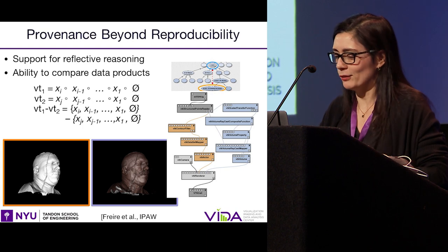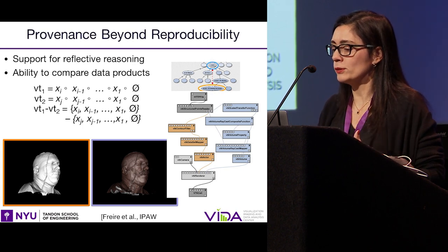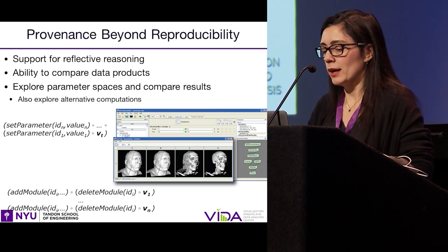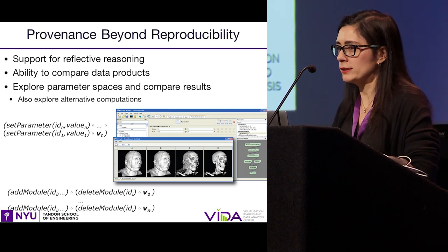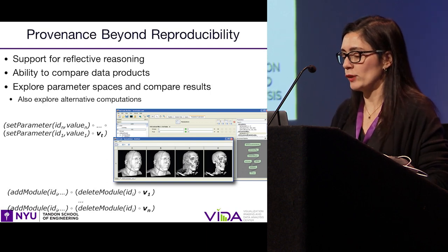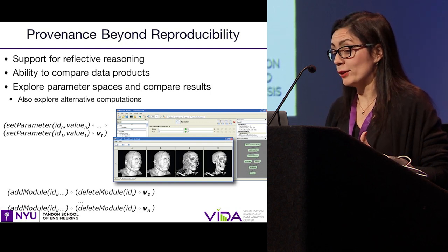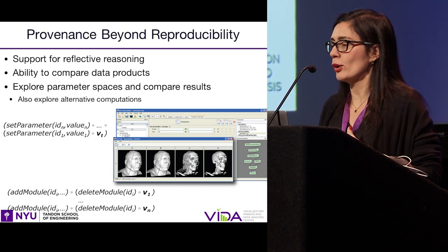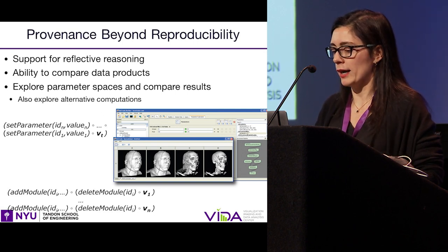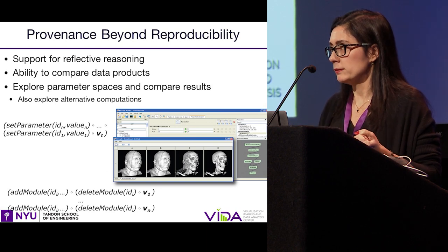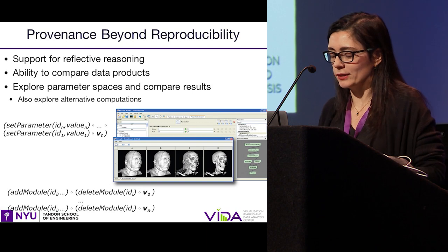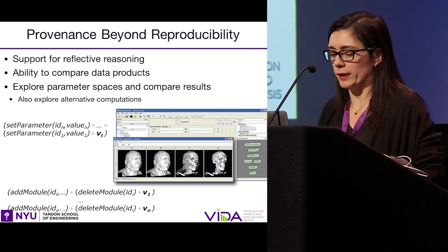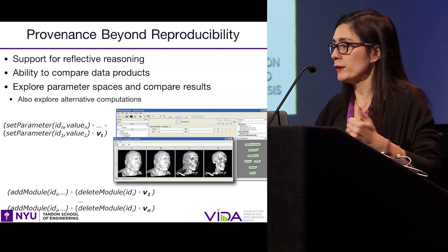Behind this, we actually have an algebra that also enables you to compute these differences in a very efficient way, even for very large workflows. This model also allows you to systematically explore parameter spaces — for example, for this visualization you can check different values for your isosurface and see what effect it has on the final visualization. The same mechanism can actually be used to explore different methods to do your analysis. You could very easily change from isosurface to volume rendering for all of them. So you can not only explore parameters, but also different modules or different functions.